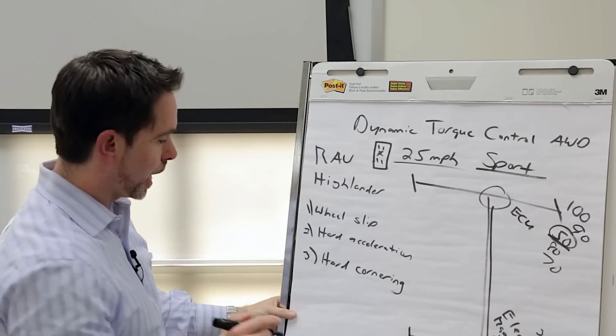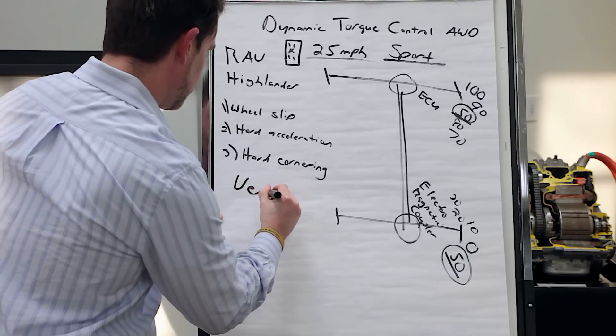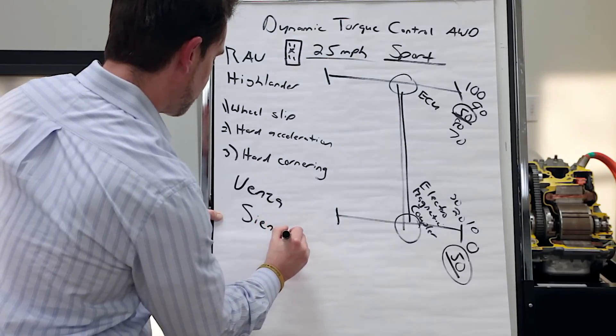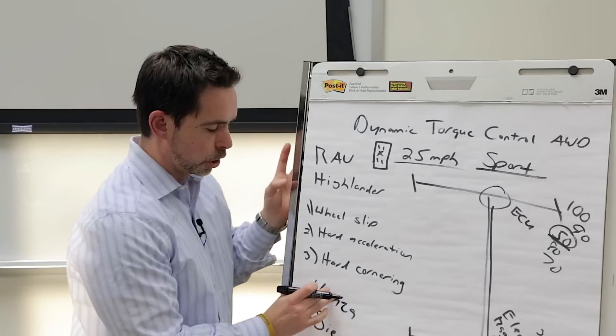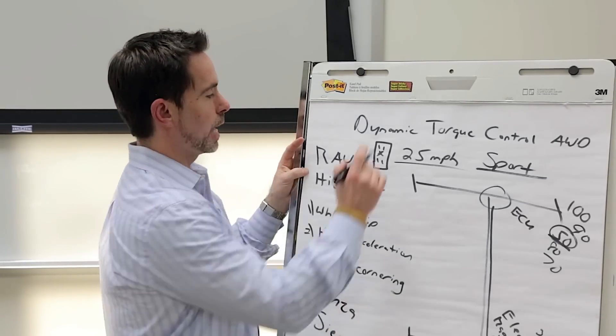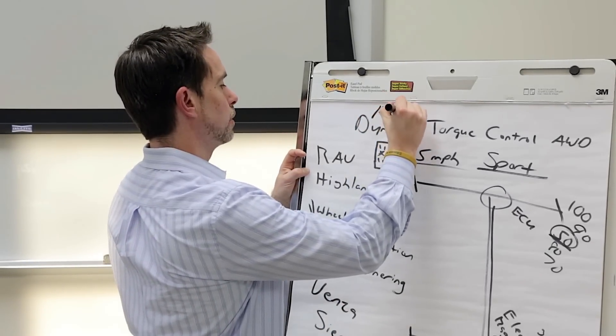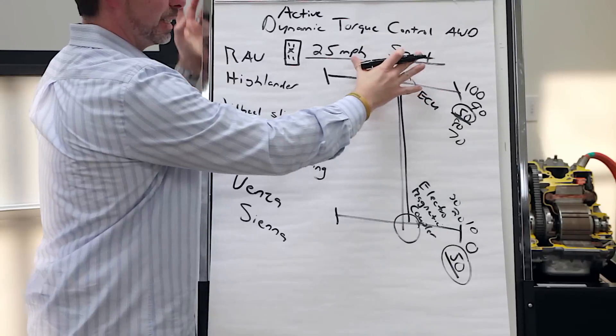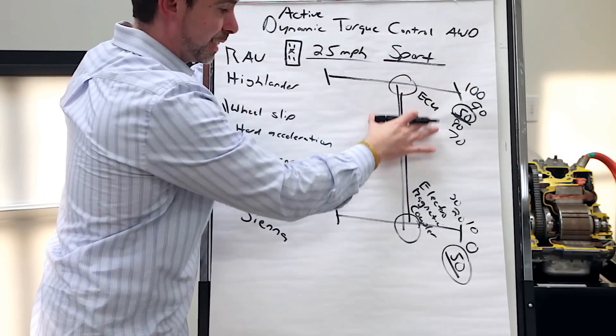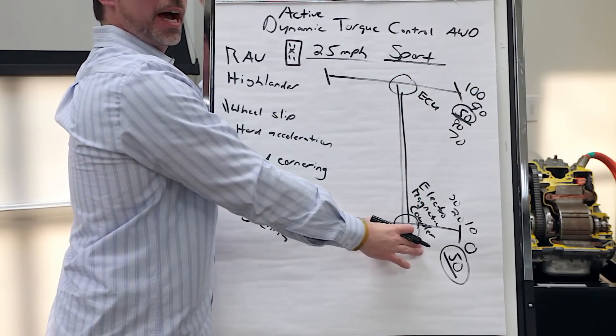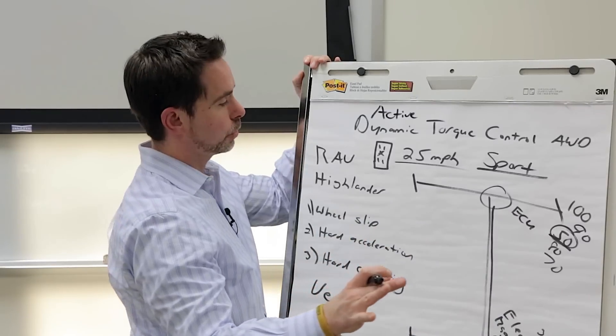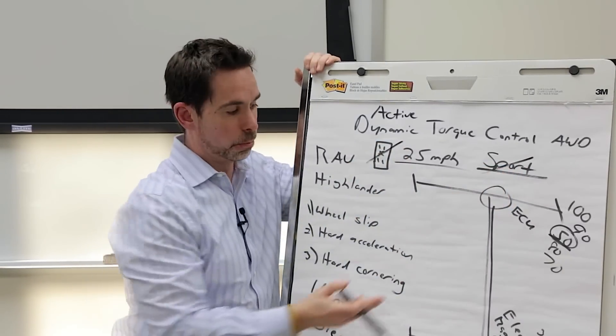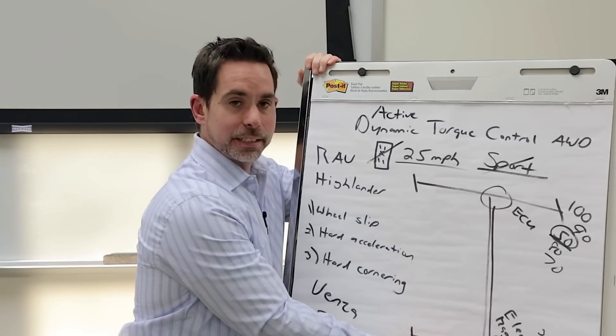Two vehicles I want to add to this are Venza and Sienna all-wheel drive. Those two vehicles have a similar system and that's known as active torque control all-wheel drive. Does the same as all of this. All of this is identical with active torque control. The only thing you don't have to talk about or remove is the all-wheel drive lock and the sport mode. Other than that, it's identical.